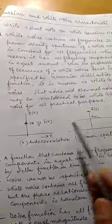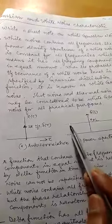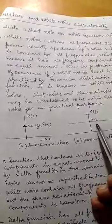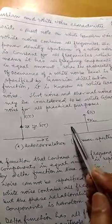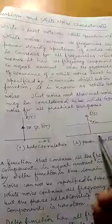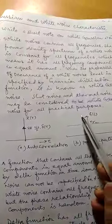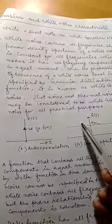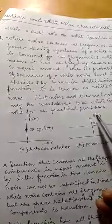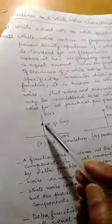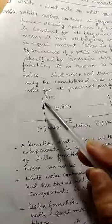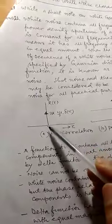...noise power spectral density is constant of n naught by 2 amplitude over full range minus infinity to plus infinity. So this is the characteristic of white noise. And here the autocorrelation of the white noise has been given here.